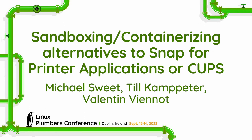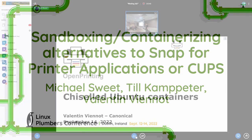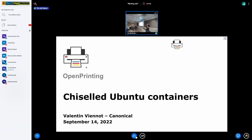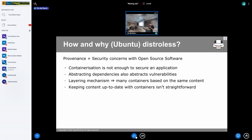Thanks for having me, thanks for the last-minute invitation. I'm going to discuss a side topic, not really related to the open printing topic, but more like a side issue we have with OCI containers — though it's also true with snaps. I manage the OCI parts of container images at Canonical. I'm giving a longer version of this talk tomorrow evening at the Open Source Summit.